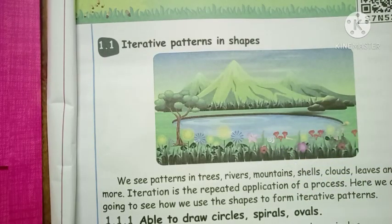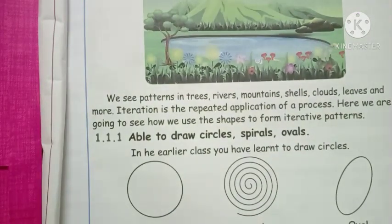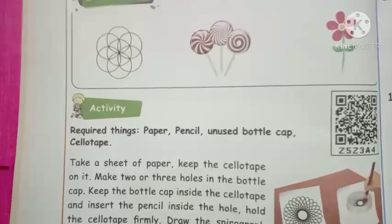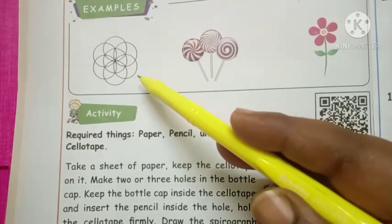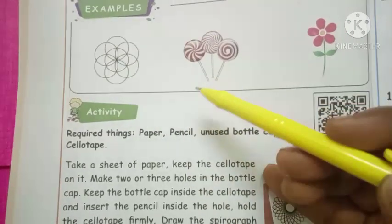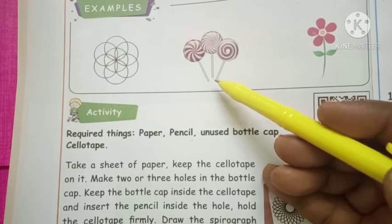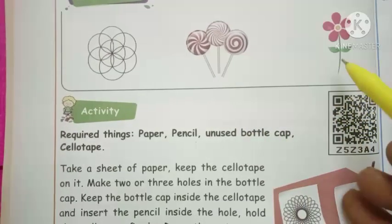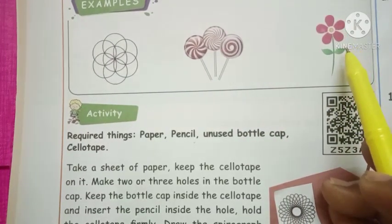Here are some examples. The first ones are circle, spiral, and oval shapes. Circle shapes are used in rangoli. Spiral shapes are seen in toffees. Oval shapes are seen in petals of a flower.